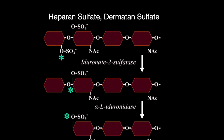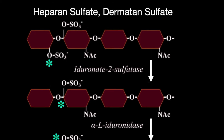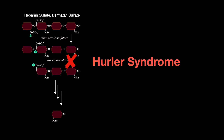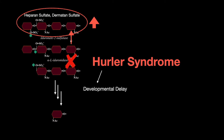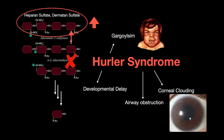Heparan sulfate and dermatan sulfate are glycosaminoglycans that are broken down in the lysosome by the enzymes alpha-L-iduronidase and iduronate-2-sulfatase. A deficiency of alpha-L-iduronidase results in Hurler syndrome. It causes heparan sulfate and dermatan sulfate to accumulate, leading to developmental delay, gargoylism, airway obstruction, corneal clouding, and hepatosplenomegaly.